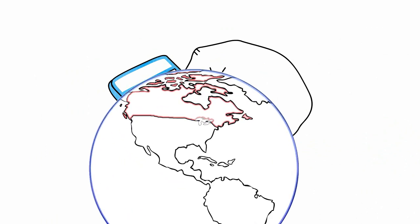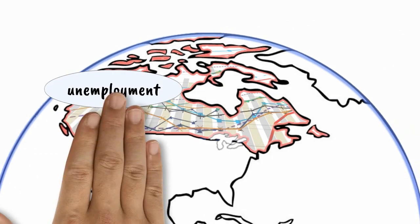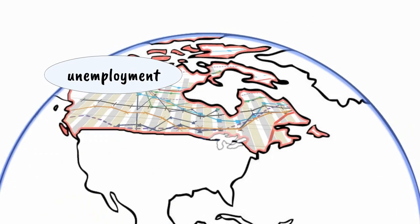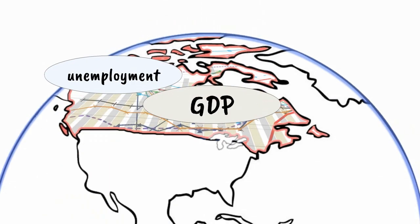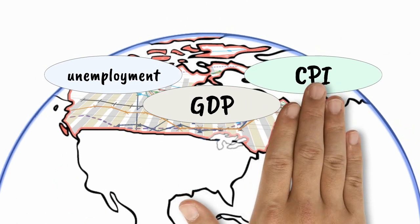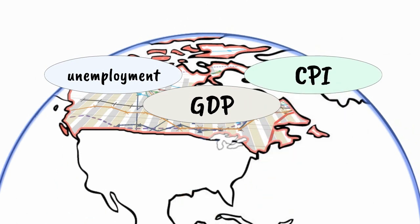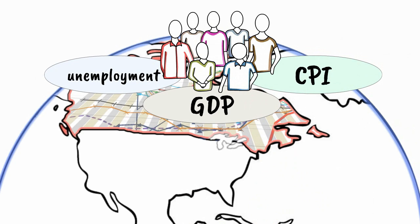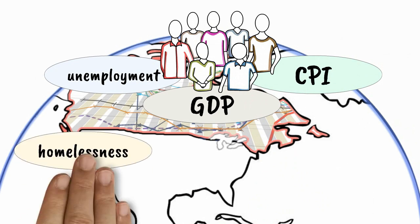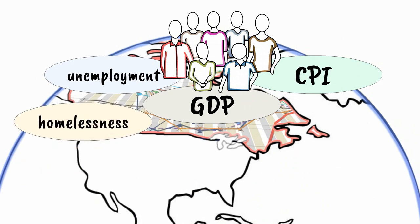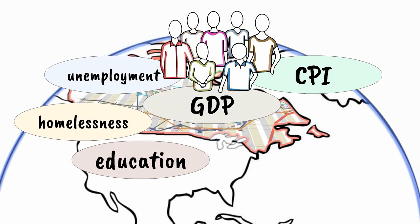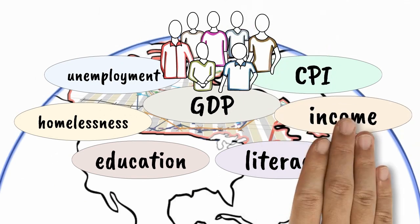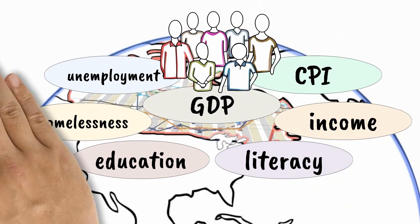For a country, indicators like unemployment rates, the gross domestic product, and the consumer price index shed light on the state of the economy, while others tell you things about the people living there, like rates of homelessness, education, literacy, or income. Getting the picture?